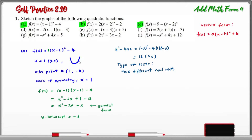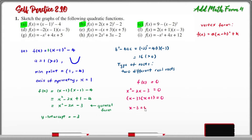This means the parabola intersects the x-axis at two different points. To find the roots, we let f(x) = 0: x² - 2x - 3 = 0. Factorizing gives (x - 3)(x + 1) = 0, so x = 3 or x = -1.